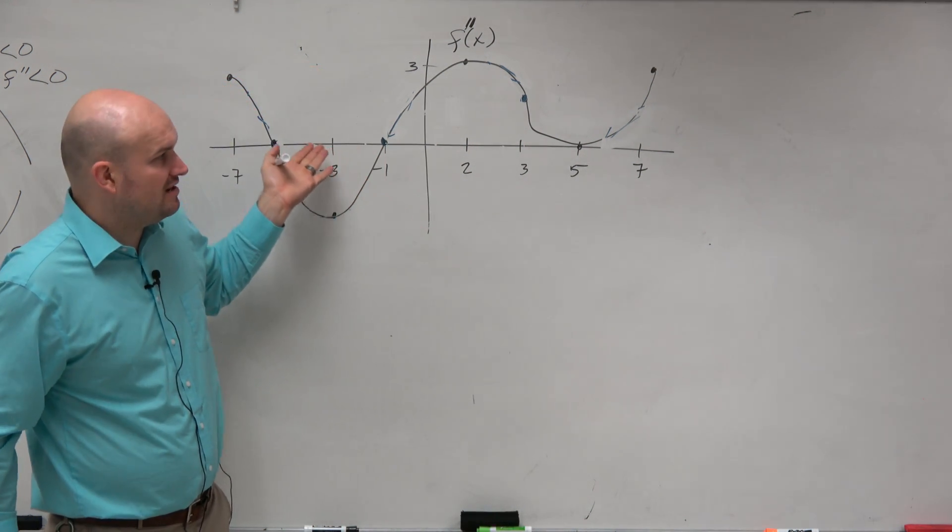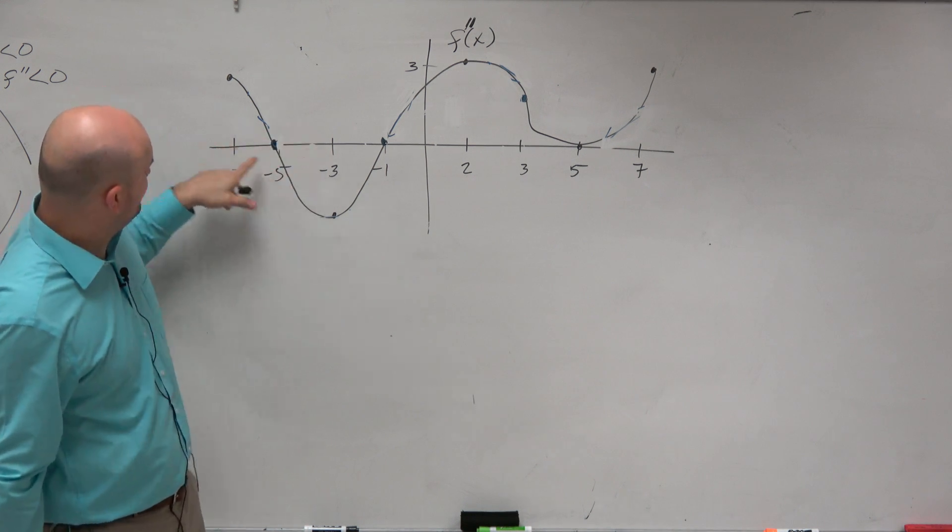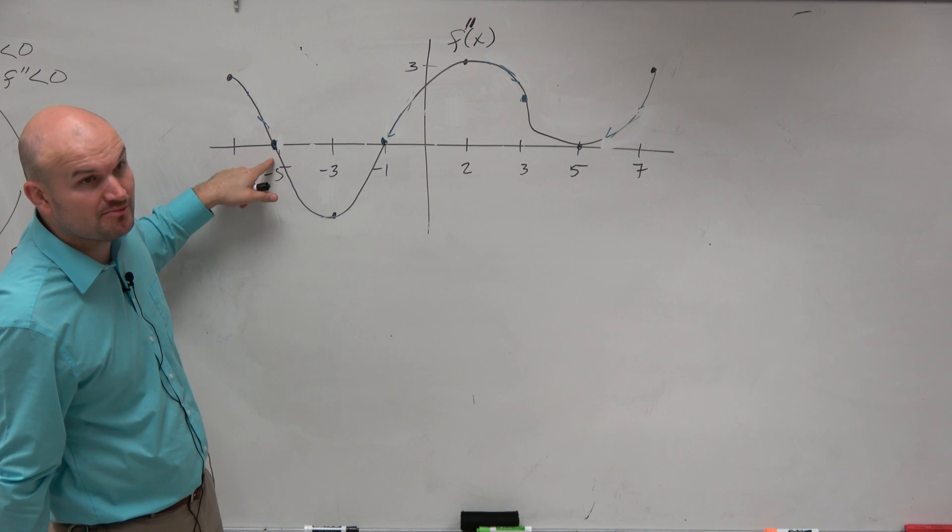So what values do we have? For what intervals do we have something that's positive? Well, from negative 7 to 5, is the second derivative function positive?